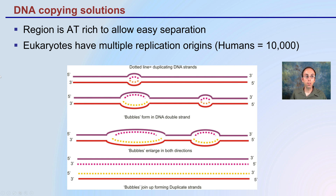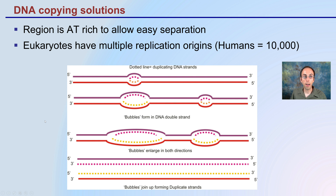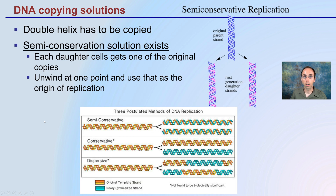The replication origin region is AT-rich — adenine and thymine — which allows easy separation, since those base pairs only have two hydrogen bonds. Eukaryotes have multiple replication origins; humans can have around 10,000 origin points, and eventually these all meet, producing the newly synthesized DNA. This greatly reduces the time required for replication.